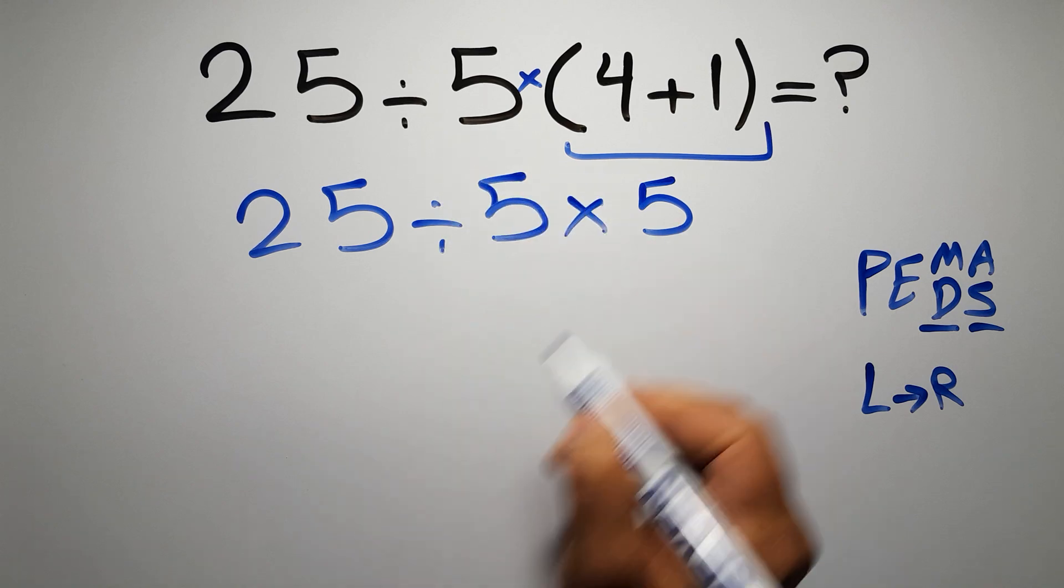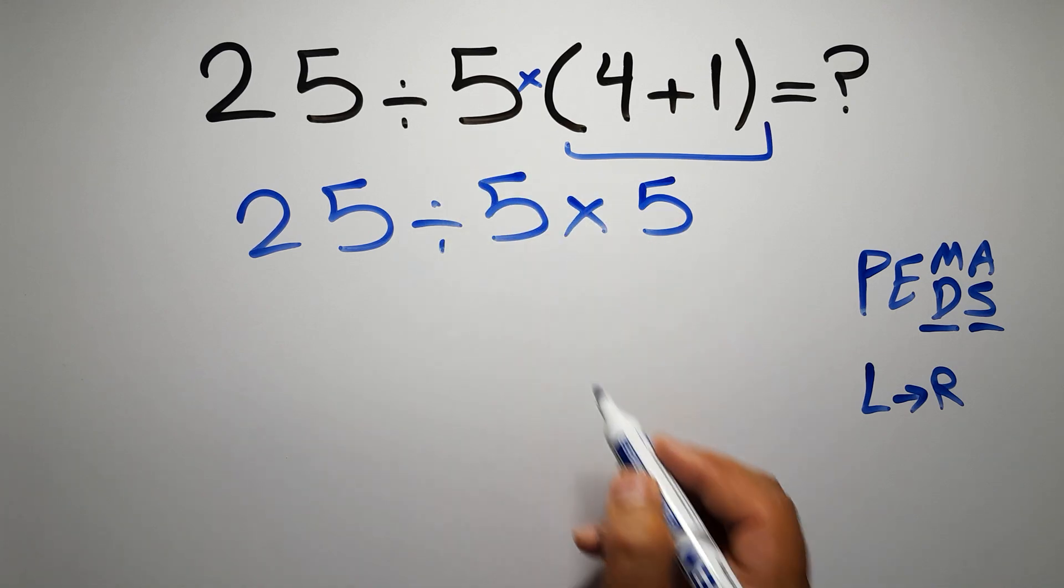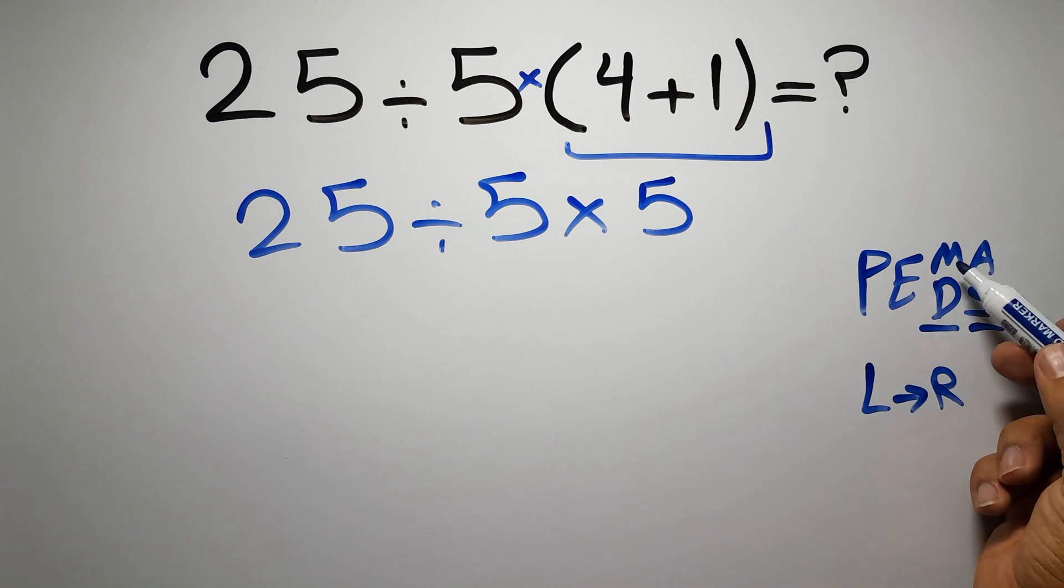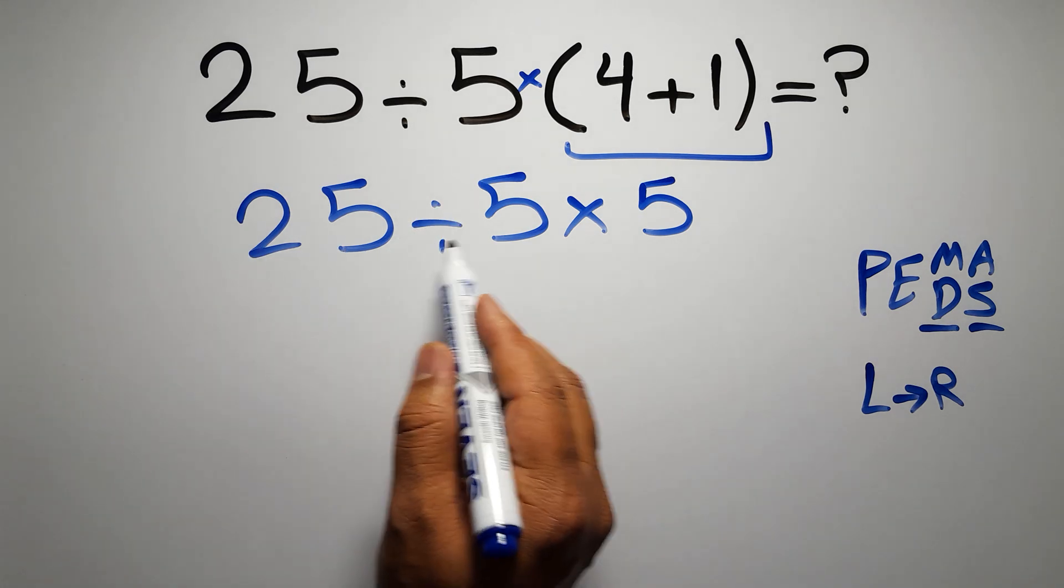Now we have one division and one multiplication. As I said, multiplication and division have equal priority and we have to work from left to right, so here first we have to do this division: 25 divided by 5 is just 5.